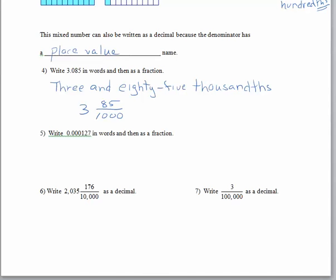Let's come down to number seven. We have three one-hundred-thousandths as a decimal. Three one-hundred-thousandths - we don't have any whole number.